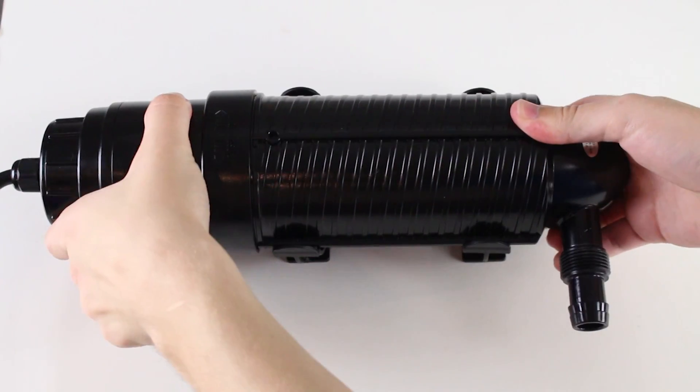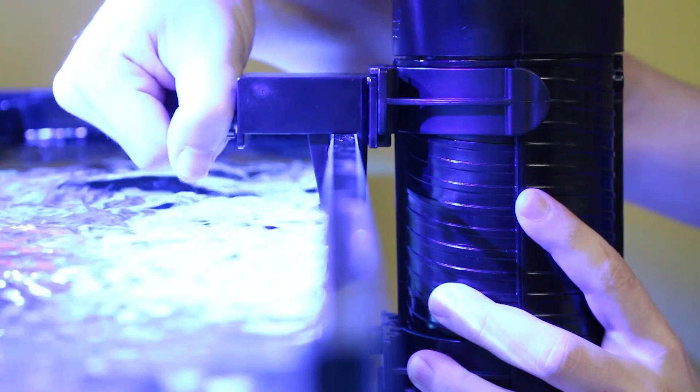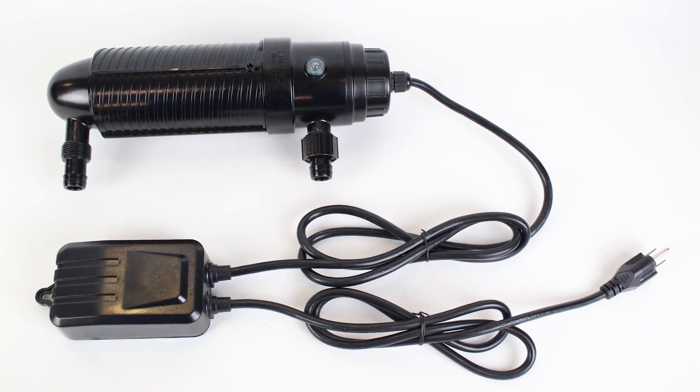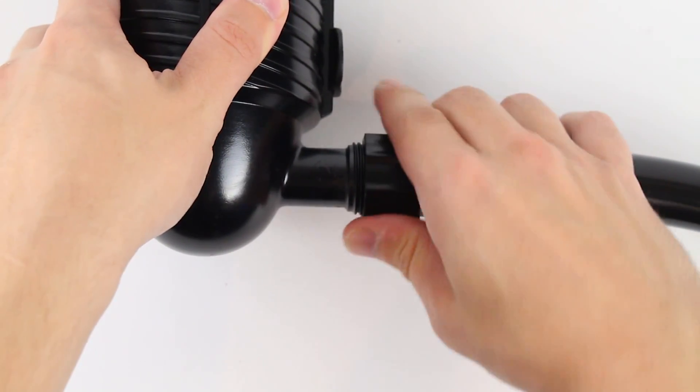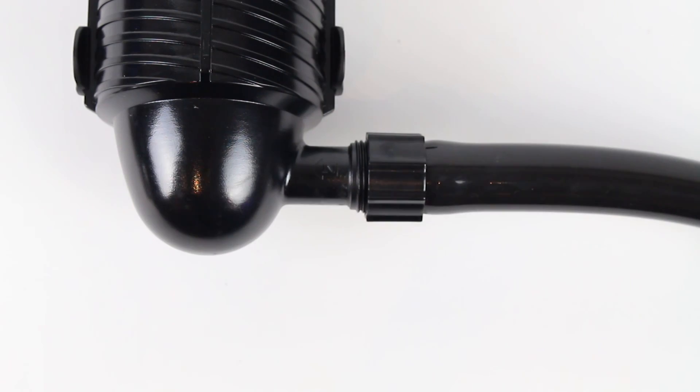The sterilizer can be positioned under the aquarium or mounted on the lip of the tank. The 9 foot power cord is also a welcome feature. Two locking hose barbs make connecting the sterilizer to the outflow of a canister filter or to a dedicated water pump quick and easy.